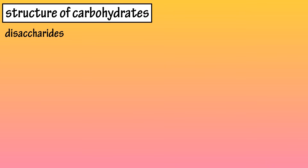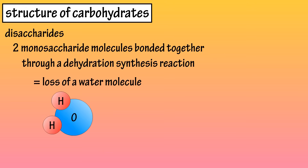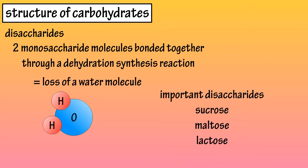Disaccharides, or double sugars, are composed of two monosaccharide molecules bonded together through a dehydration synthesis reaction, which results in the loss of a water molecule. Some important disaccharide molecules include sucrose, maltose, and lactose.